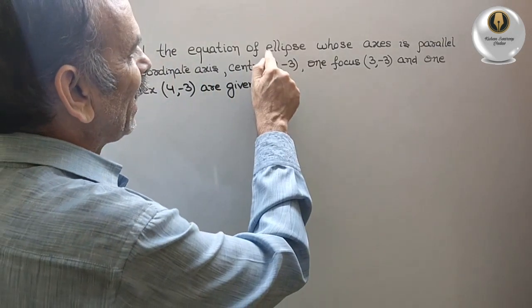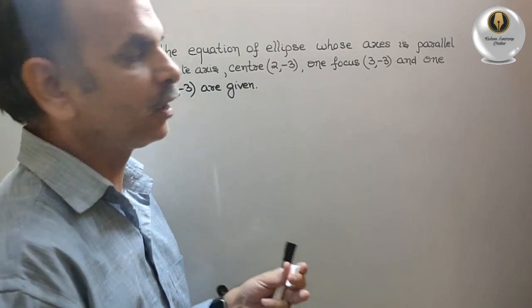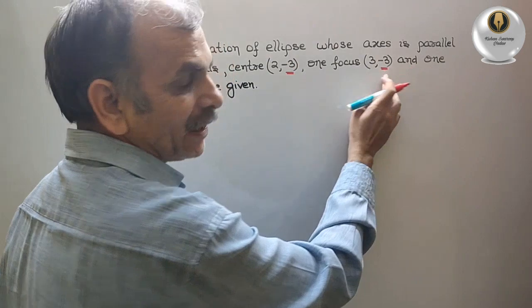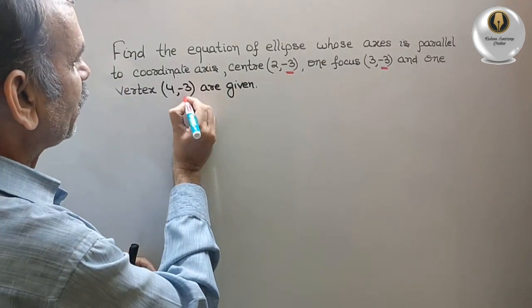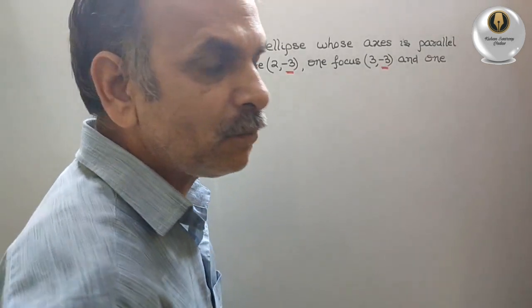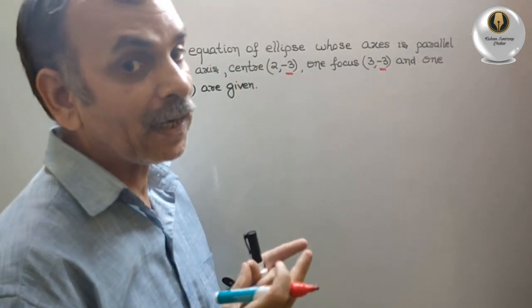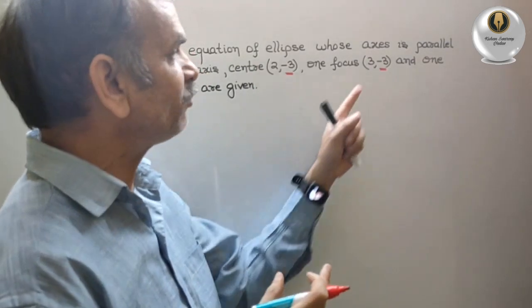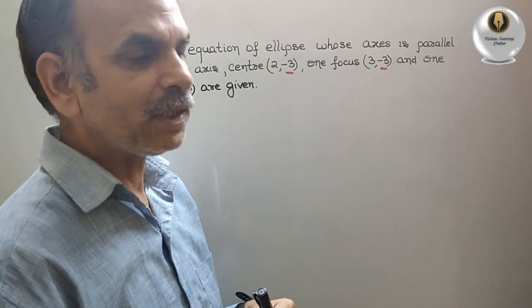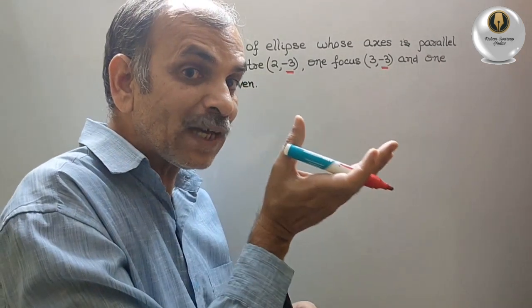We have to draw an ellipse. You can see one thing — the y-coordinate is -3 in all three given points: center, focus, and vertex. That means y is constant and x is varying across all three places. That means the ellipse lies parallel to the x-axis.